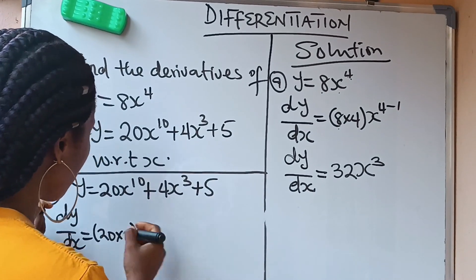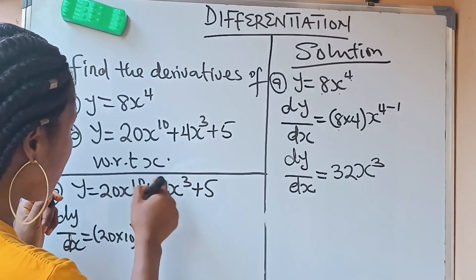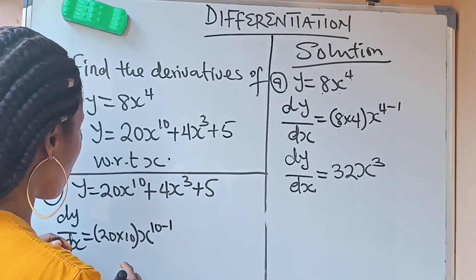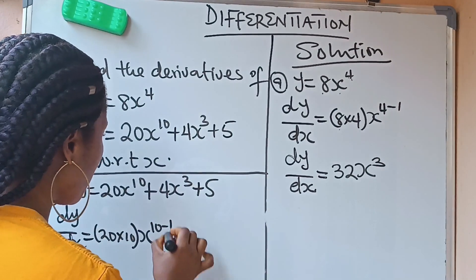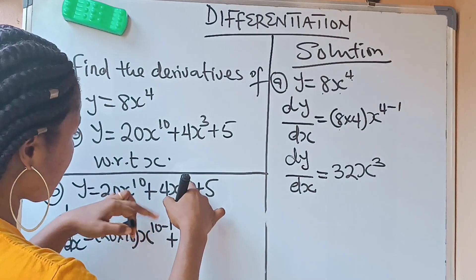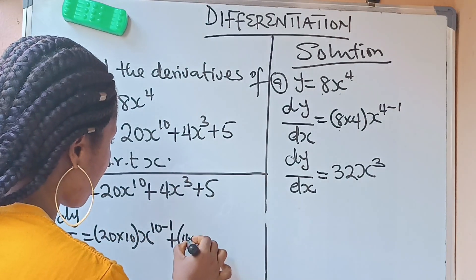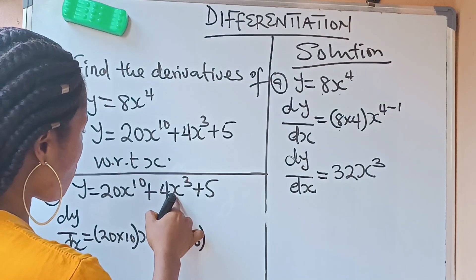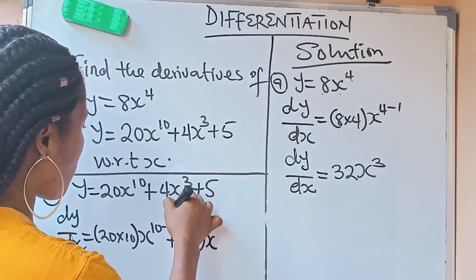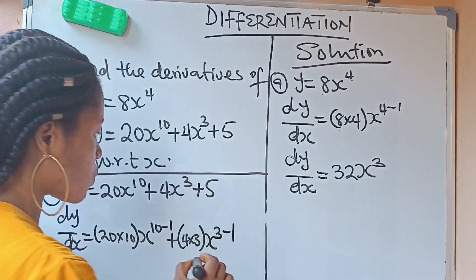You write your x for them. Then you subtract 1 from 10 again. 10 minus 1. You are through with this one. Plus, you have 4 and 3. 3 will multiply this 4. So you are going to have 4 times 3. Then you write your x again raised to the power of what? 3 minus 1.